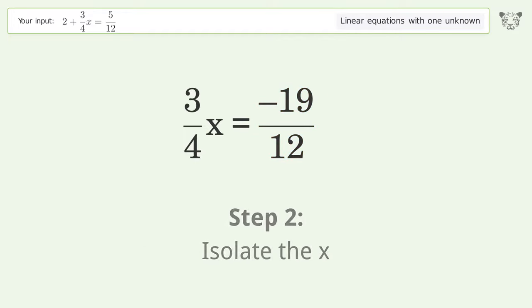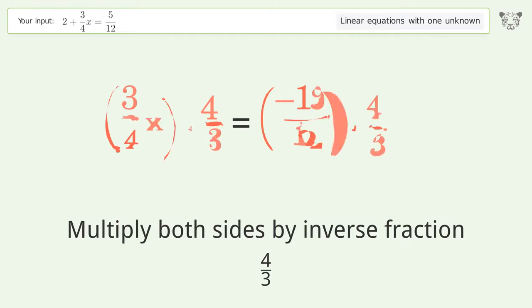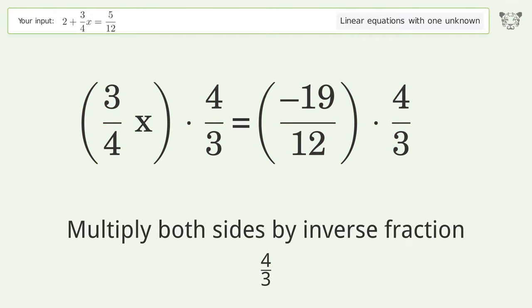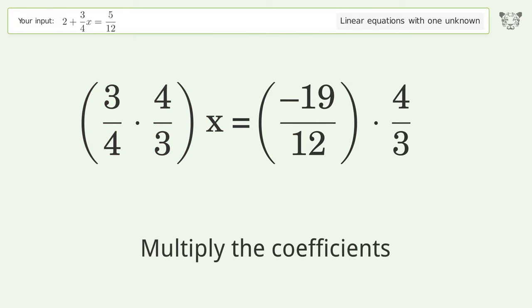Isolate the x. Multiply both sides by the inverse fraction, 4 over 3. Group like terms. Multiply the coefficients.